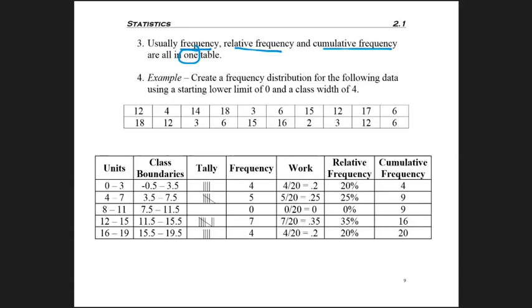But imagine we want to do that down below. It says create a frequency distribution, although it should say a frequency, relative frequency, and cumulative frequency distribution for the following data using a starting lower limit of 0 and a class width of 4. Remember, I said that the starting lower limit and the class width will always be provided in this class.